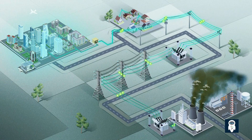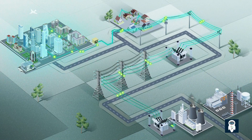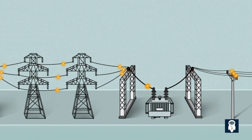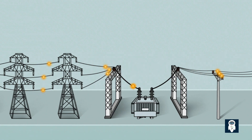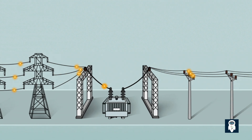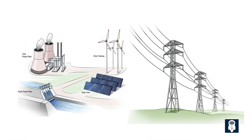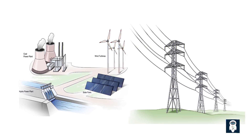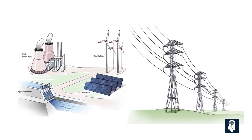Power line configuration plays a critical role in the efficient and reliable distribution of electricity across vast networks. The design of power lines, whether for high-voltage transmission or low-voltage distribution, is a complex process that takes into account various factors such as capacity, safety, and infrastructure requirements. One common question that arises is why high-voltage transmission lines often feature two power lines on each pole, while low-voltage distribution lines typically have only one. Let's dive right in.